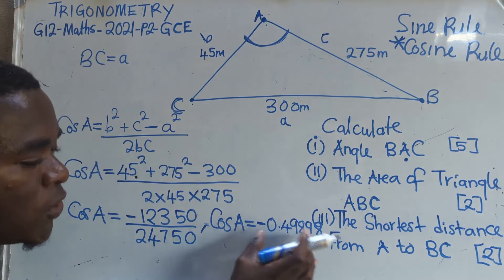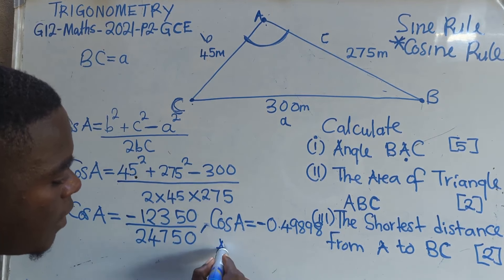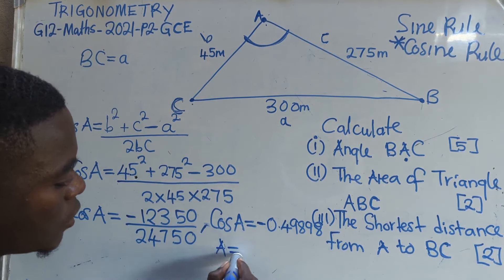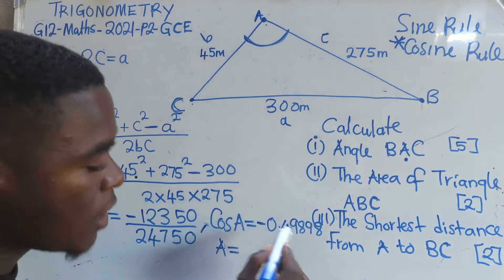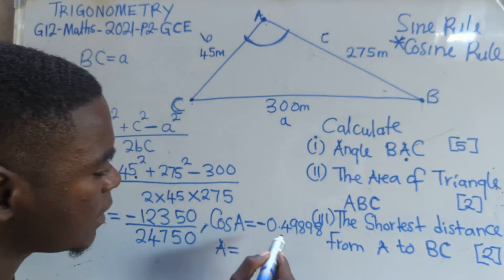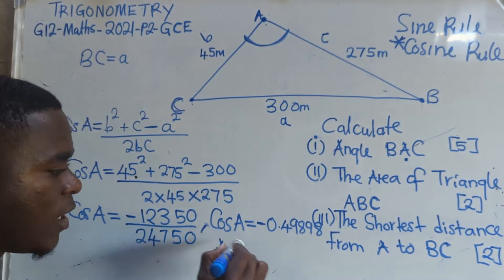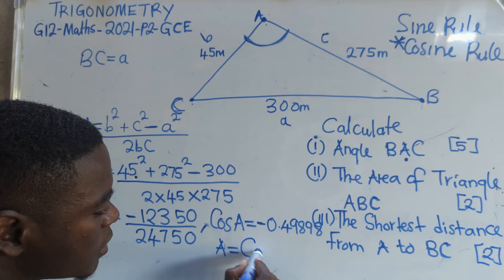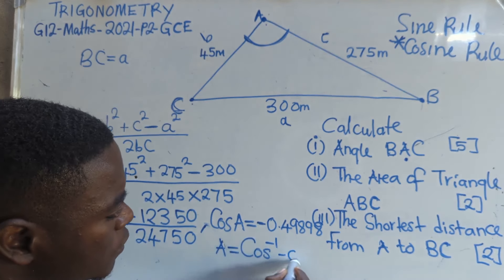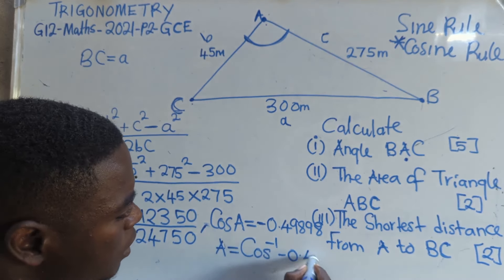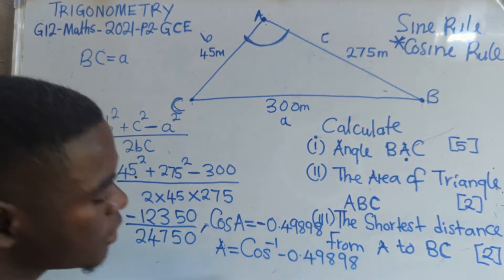So this means that A is equal to — this cos will go to the other side. So when cos moves to the other side, it carries an inverse, meaning you are going to have cosine inverse of negative 0.4989.